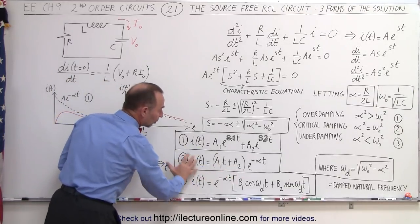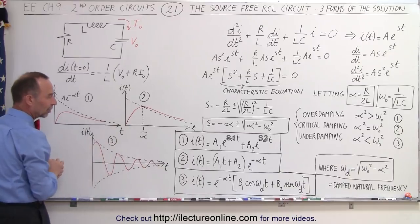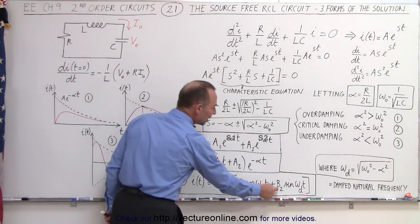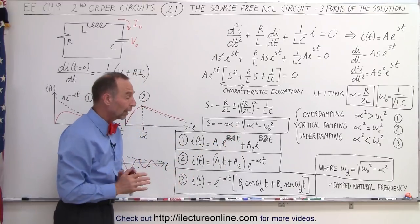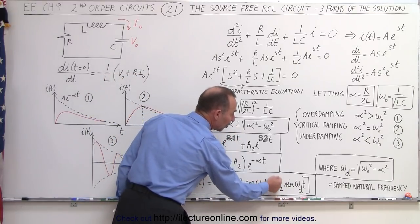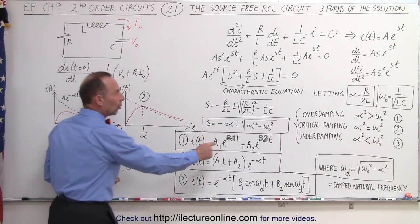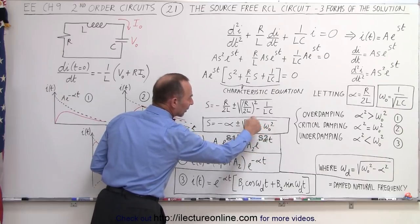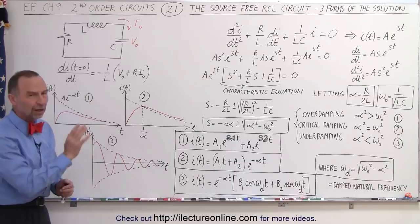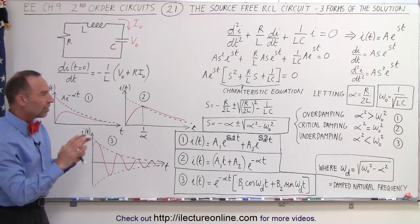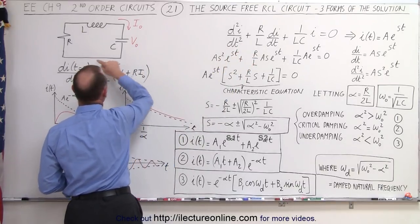Here we have the three general forms of the solution with their corresponding graphs. Keep in mind that B1 and B2 will be defined in terms of A1 and A2 — we'll show how to do that later. B2 will have the imaginary unit j in it, which is still part of the imaginary part of the solution when the determinant is less than zero. We'll show you how to arrive at that as well.